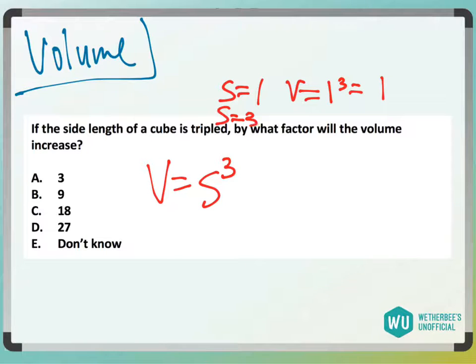Let's triple that. If the side length is 3, the volume is 3 cubed, and that is 27. So it increased from 1 to 27, which is a factor of 27.